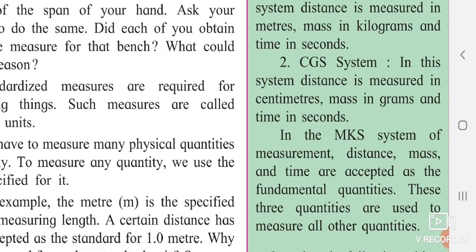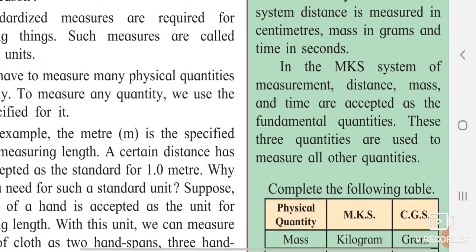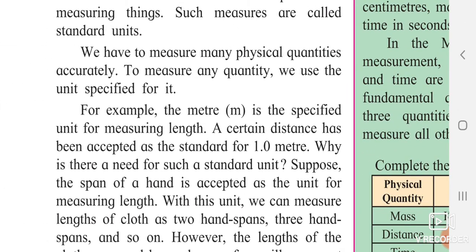In the MKS system of measurement, distance, mass, and time are accepted as fundamental quantities. These quantities are used to measure all other quantities. A meter is the specified unit for measuring length — a certain distance has been accepted as the standard for 1.0 meter.